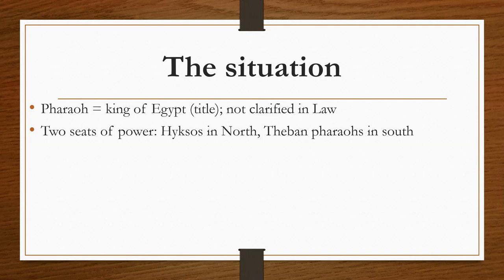It doesn't exactly say, but it gives us a clue. The king said his people feared Israel joining their enemies in war against them. If it's the Hyksos, they're talking about the Theban pharaohs as the enemy; if Theban, they're talking about the Hyksos. They set taskmasters over Israel and built store cities Pithom and Rameses. At the time of the Hyksos — before 1550, before Moses was born — the Hyksos controlled northern Egypt. Pithom and Rameses are both in the north, so we can assume we're talking about a Hyksos pharaoh here.